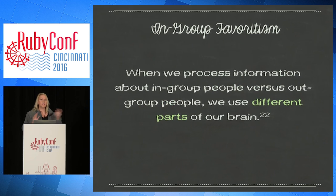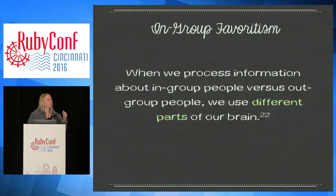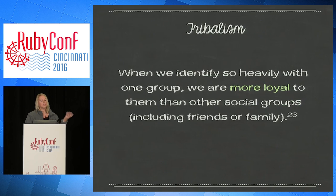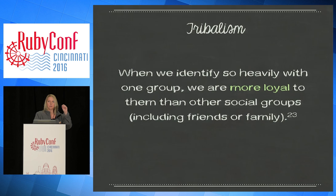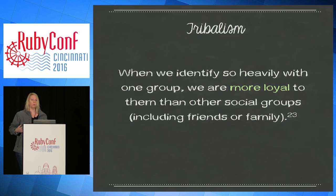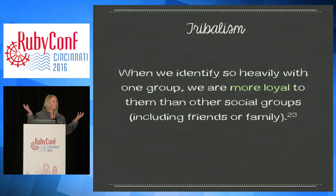When we see someone in our group, there's a part of our brain processing information about them differently than when we see someone who is definitely not in our group — it's a whole other side of the brain. With tribalism, we put our whole identity into whatever tool or technology we use, so if someone says something bad about it, that's our identity being attacked. It's something to be aware of and mitigate against, because we're all doing the same thing and we all want the same things.